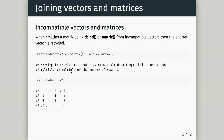We're going to have the same recycling problem with matrices that we had with vectors of incompatible lengths. Here I'm creating a matrix one to five with two columns but three rows — I need six values but only have five. It gives this warning: data length five is not a sub-multiple or multiple. It will recycle, going one, two, three, four, five, and then start from the beginning again.